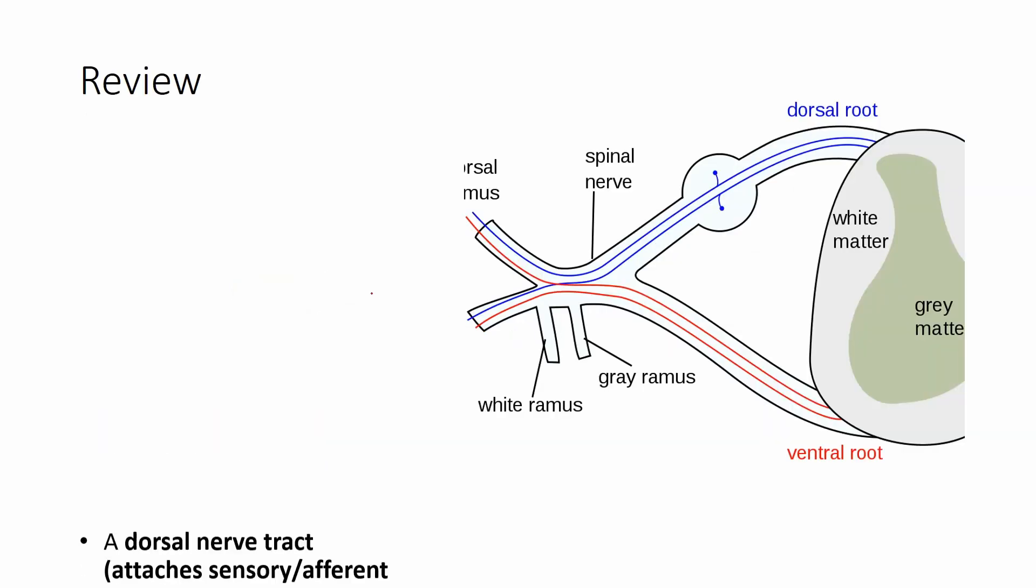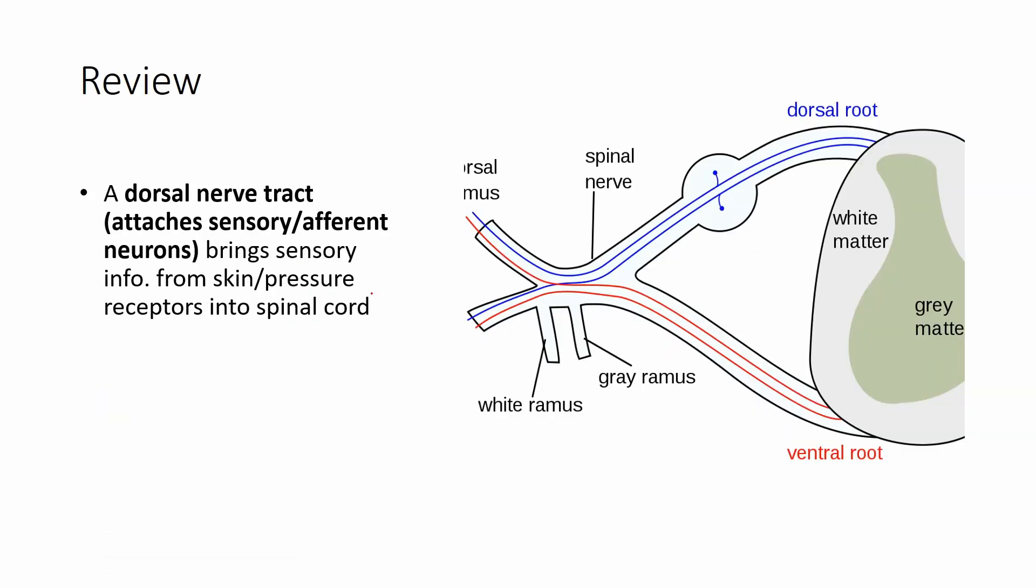This is going on the premise... just a quick little review again, this is from topic 11, page 27 of the notes, unit one notes. It talks about the dorsal, sometimes this diagram talked about the dorsal root, same thing, it's the dorsal nerve tract. Of course it attaches the sensory or also known as the afferent neuron, which brings information from the receptors from the skin, pressure, any of that kind of stuff to the spinal cord for interpretation.